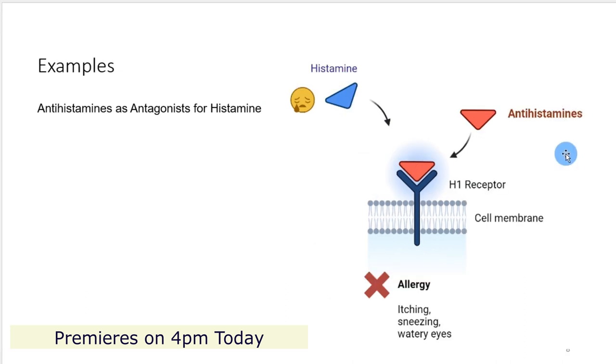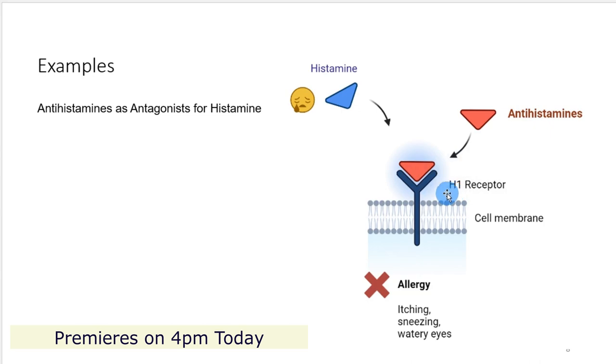Antihistamines such as pheniramine, cetirizine, and loratadine block the effects of histamine at the H1 histaminergic receptors.